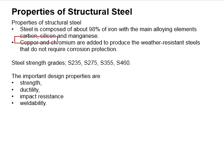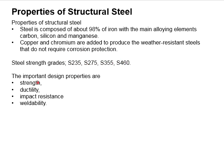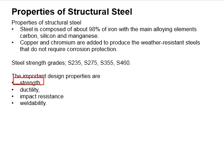The altered properties make it stronger in terms of resistance to deformation. Copper and chromium can also be added to prevent corrosion issues. These are some typical strength grades of steel, which include 235, 275, 355, and 460. The important design properties of steel include strength, ductility, impact resistance, and weldability.